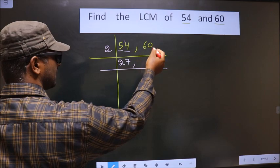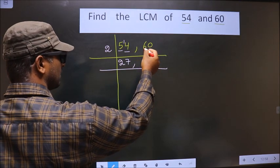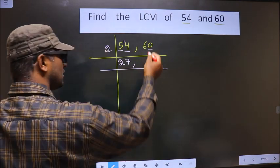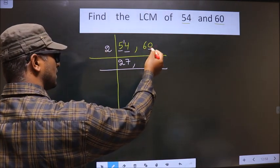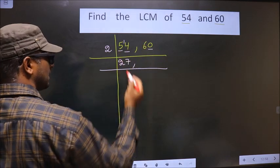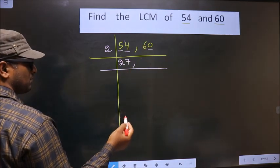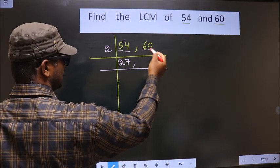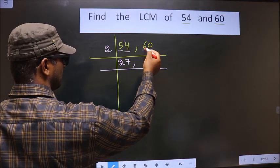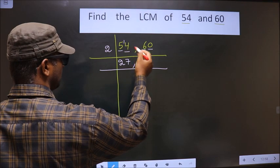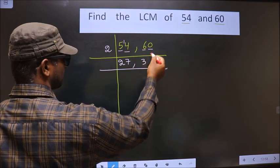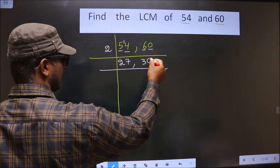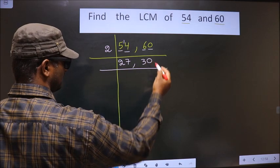Now the next number, 60: the last digit is 0, so this number is also divisible by 2. The first digit is 6 — when do we get 6 in the 2 times table? 2×3 is 6. This 0 is carried down as it is. So 60 divided by 2 gives 30.